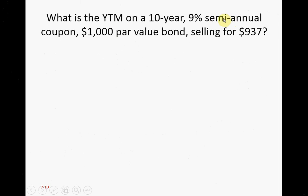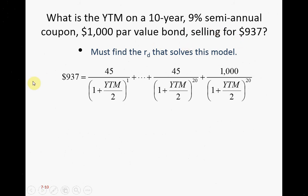The tricky part is when the coupon is made semi-annually — you have to make adjustments. If you lay out the valuation model, the present value equals all the cash flows generated by the bond: $45 each semi-annual period. That $45 comes from 9% times $1,000 = $90 per year, divided by 2 = $45 per semi-annual period. There are 20 semi-annual periods in a 10-year bond, and the yield to maturity must be divided by 2 to discount semi-annual cash flows.